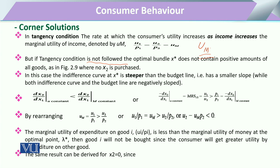When income is utilized on only one commodity, the equation changes: the change in utility for one commodity due to its price change will be greater compared to the other. Specifically, the marginal utility of expenditure on income for that particular good is less than the marginal utility of money at the optimal point, lambda. When this situation holds, that good will not be bought, since the consumer gets greater utility by spending on the other good.